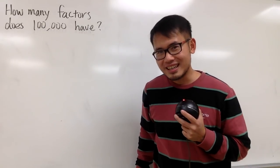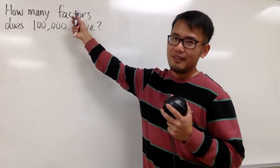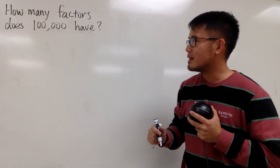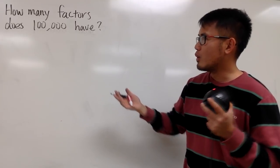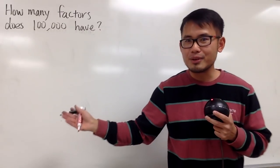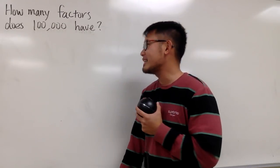Wow, 100,000. And remember, a factor is a number that divides into this number. So for example, we know 1 will work. 1 is always a factor of any number, right?